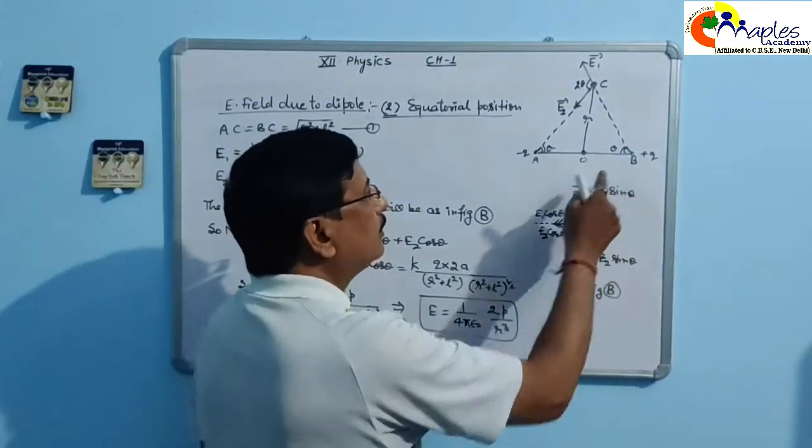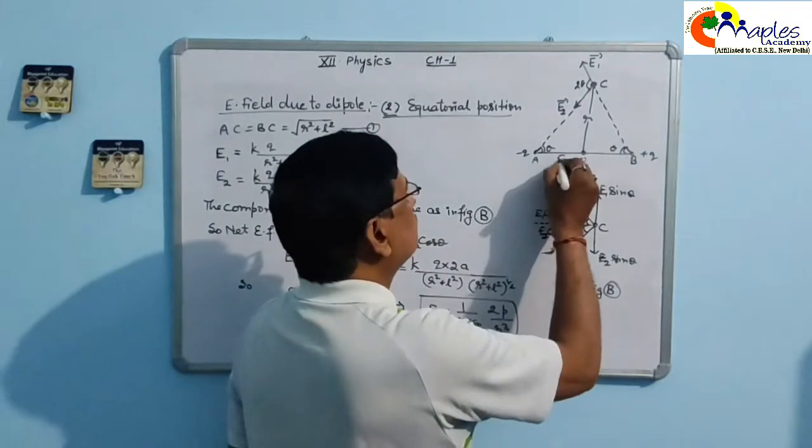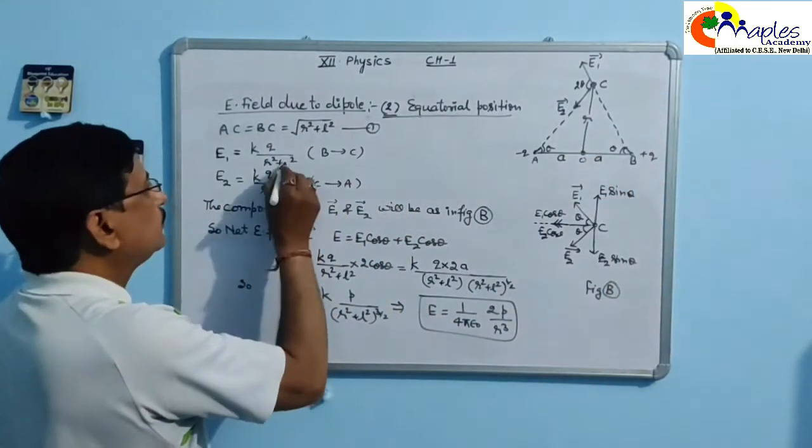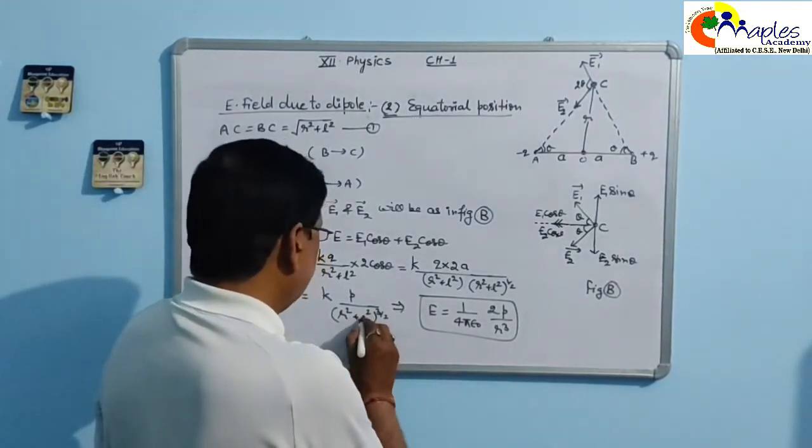Dipole AB has charges minus 2Q and plus 2Q, and the distance is 2A. This distance is 2A, and this is A.